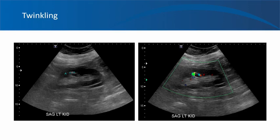In this kidney ultrasound, you see a hyperechoic structure in the upper pole of the kidney but there is no obvious shadowing, and you're not sure if it's sinus fat or a stone. On the color Doppler image, you see nice twinkling corresponding to this hyperechoic structure seen on grayscale imaging. Therefore, it is most likely a stone or calcified structure and less likely to be sinus fat.